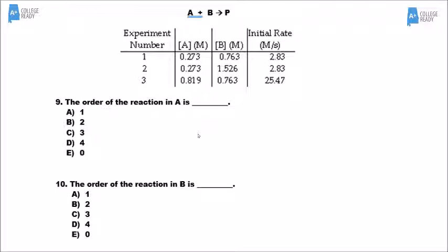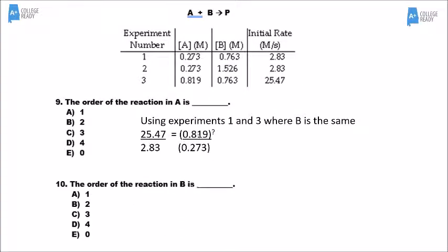For problems 9 and 10, we're writing a differential rate law based on experimental data. For A, we pick two experiments where B is the same — I'll choose experiments 1 and 3. Comparing what happens to the rate versus what happens to the concentration of A: the rate went from 2.83 to 25.47, and the concentration of A went from 0.273 to 0.819. Doing the math, 9 equals 3 to some exponent, and the exponent is 2. Therefore the order is 2, and letter B is the answer.